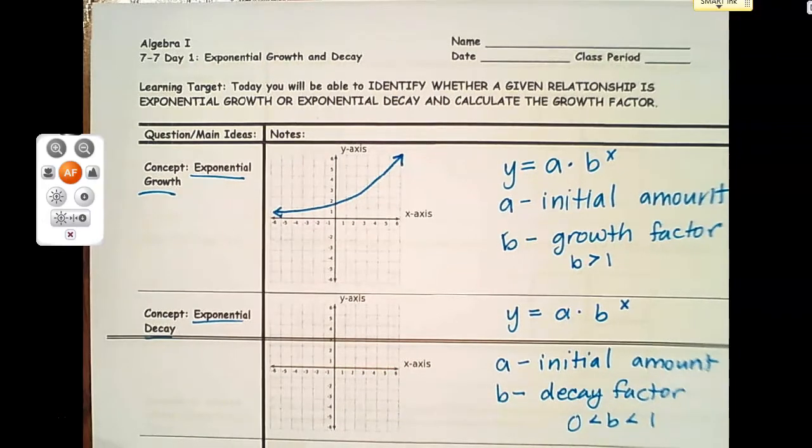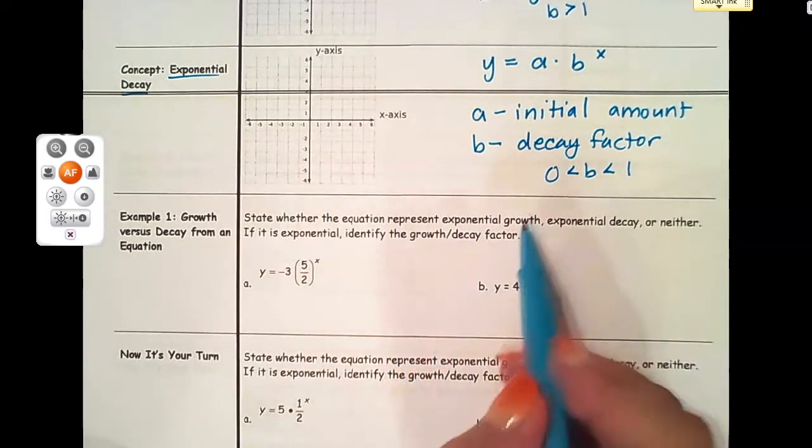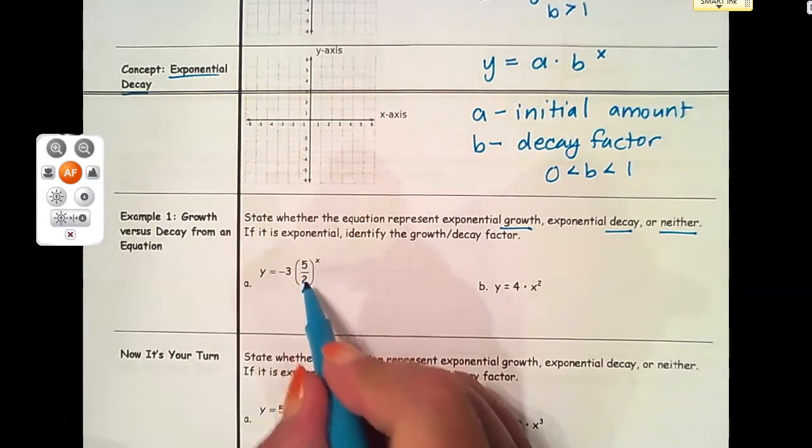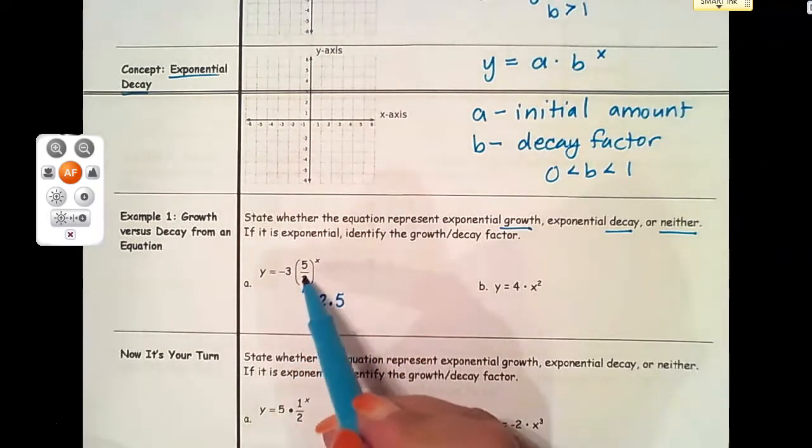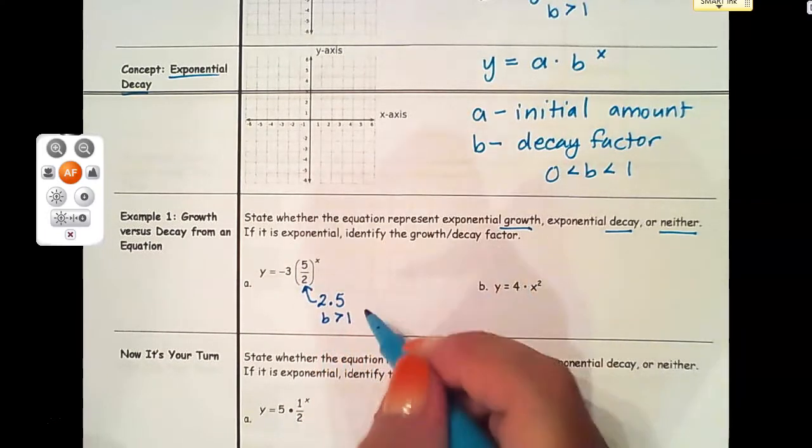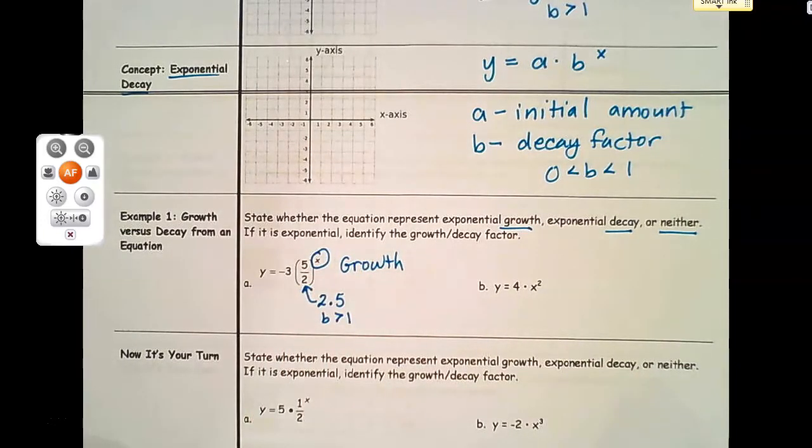Looking at example 1, we want to state whether it is exponential growth, decay, or neither. I'm going to find where's my b in this equation - my b here is 5 halves. I want to convert that into a decimal or think about whether it's between 0 and 1 or greater than 1. If I think of 5 halves as 2.5, I can clearly see that my b is greater than 1, so I'm going to have a growth. It's definitely exponential because I have that x up in the exponent.